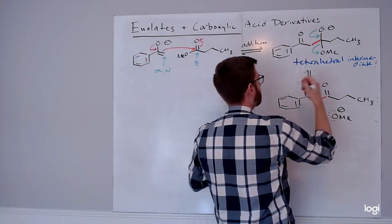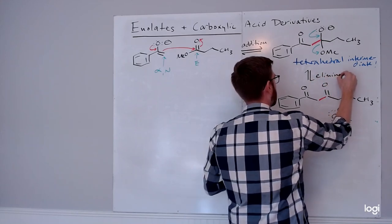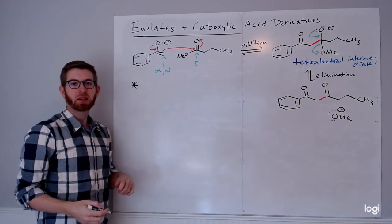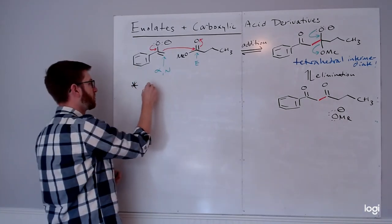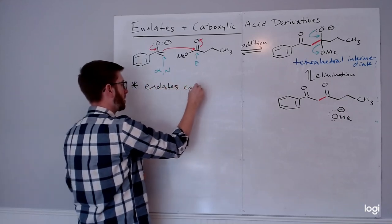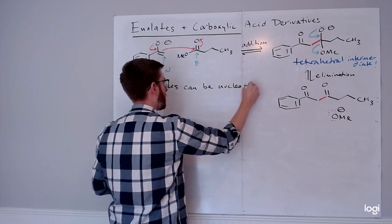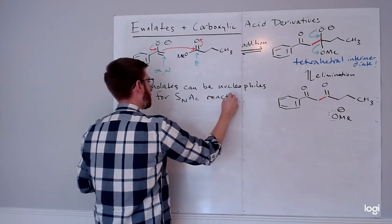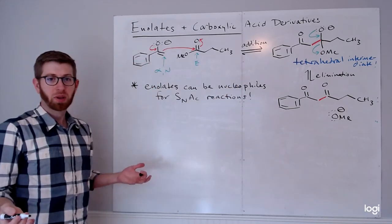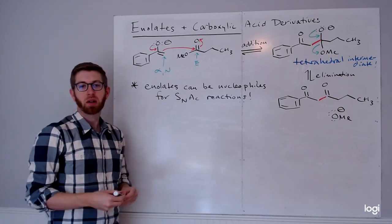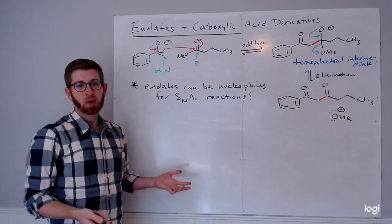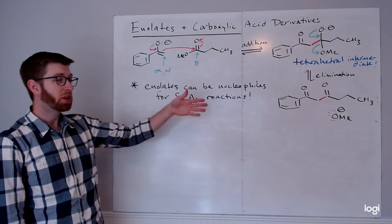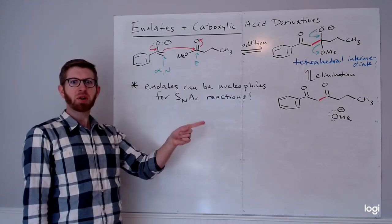What that means is that enolates can be nucleophiles for SNAC reactions. This means we can tie this part of the SLO to something you've thought about a lot: SNAC reactions, whether they're favorable. This addition-elimination is the mechanism you should memorize.